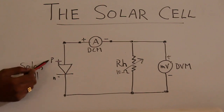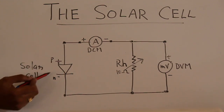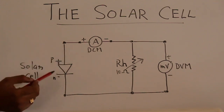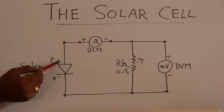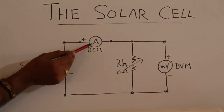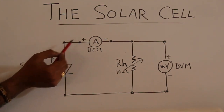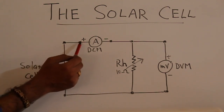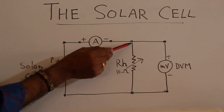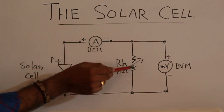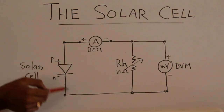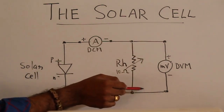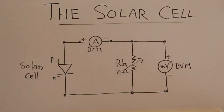The P region and N region of the solar cell can be seen here — this is the circuit symbol. The light will be falling at the junction so electron-hole separation takes place and the current flows out of the solar cell. The positive of the ammeter is connected to the P region and the negative is connected to one end of the rheostat. The negative terminal of the DC ammeter is connected to the other end of the rheostat, so the current can flow through the rheostat and come back to the solar cell, making the circuit closed. A millivoltmeter is connected in parallel to the rheostat to measure the voltage.